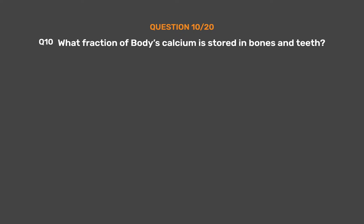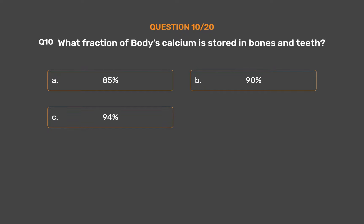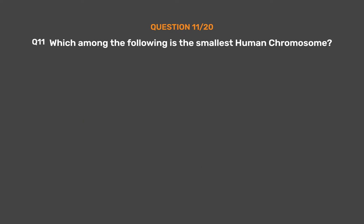Question No. 10. What fraction of the body's calcium is stored in bones and teeth? Option A: 85%. Option B: 90%. Option C: 94%. Option D: 99%. The correct answer is Option D: 99%.